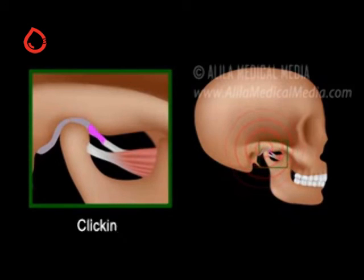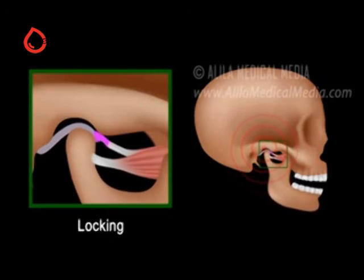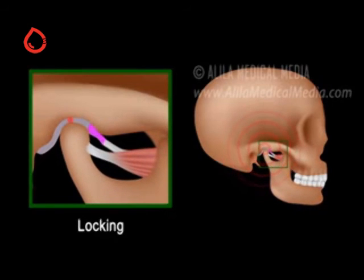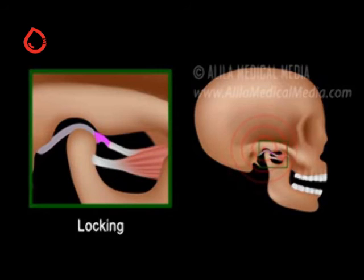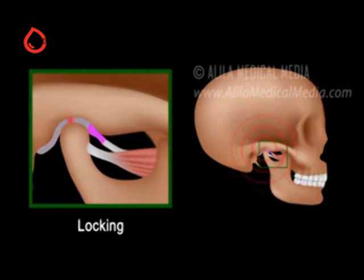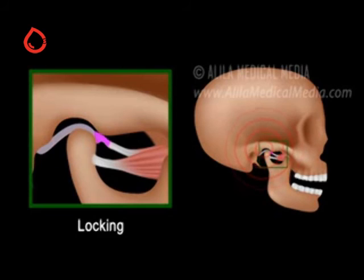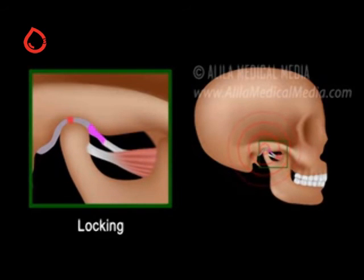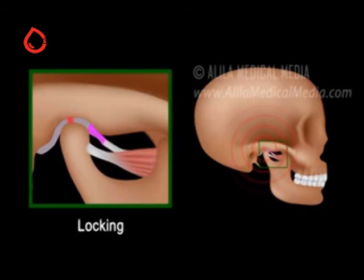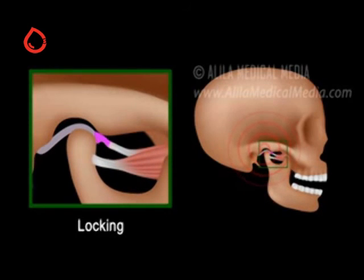In later stages of disc dislocation, the condyle stays behind the disc all the time, unable to get back onto the disc. The clicking sound disappears but mouth opening is limited. This is usually the most symptomatic stage. The jaw is said to be locked as it is unable to open wide. At this stage, the condition is called disc displacement without reduction.